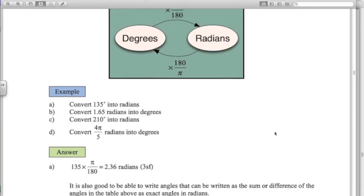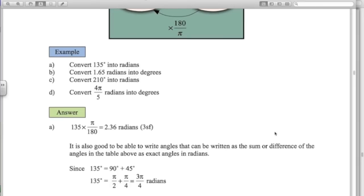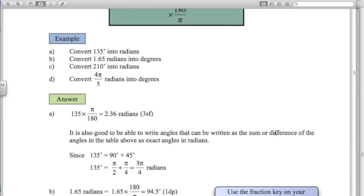Okay, so a few examples here. 135 degrees times by pi over 180 gives you 2.36 radians. Now that's to three significant figures. Or you could think of 135 as 90 plus 45. So pi over 2 plus pi over 4. There's some ones that you should know. So a half plus a quarter is 3 quarters pi, or 3 pi over 4 radians.